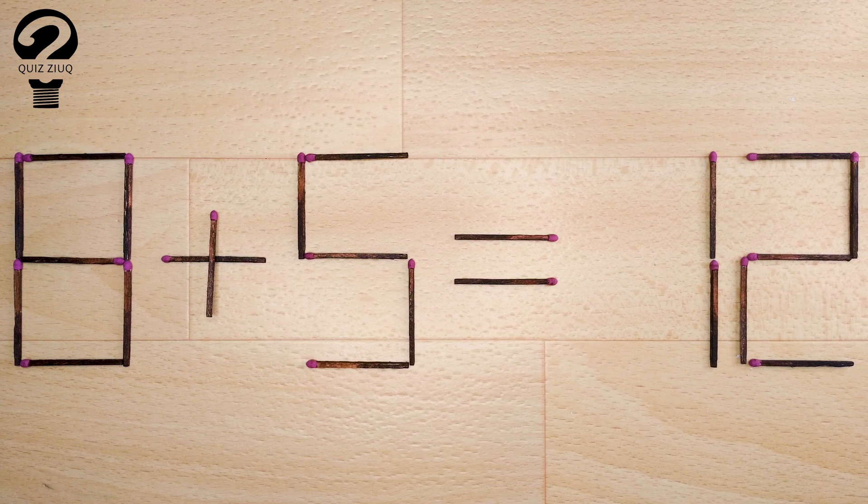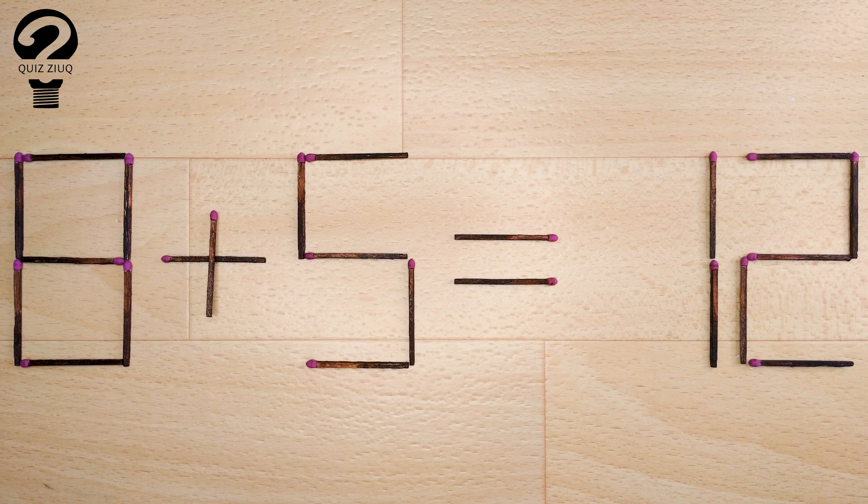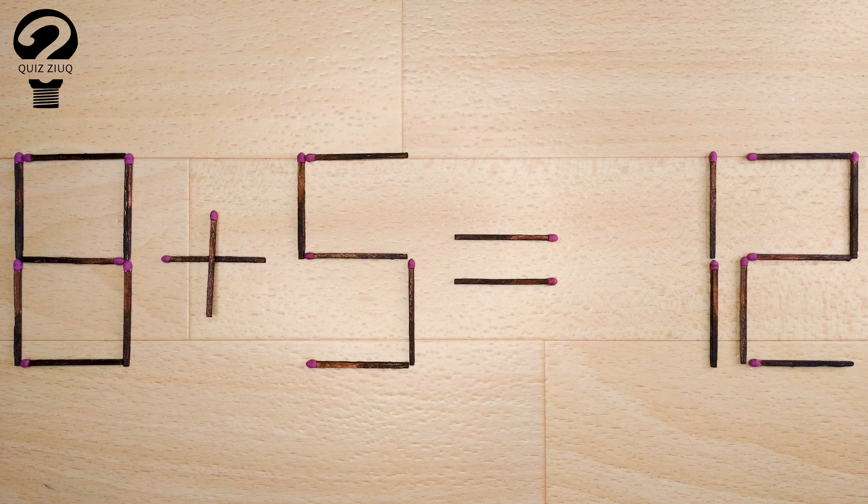Here's the next puzzle. We have this equation: 8 plus 5 equals 12. Our equation is incorrect. We need to move one matchstick to make our equation correct.